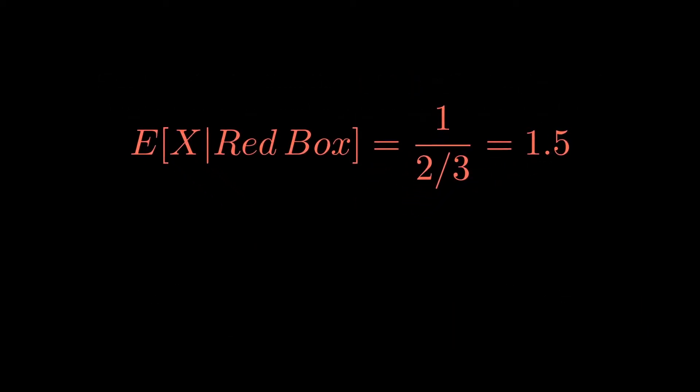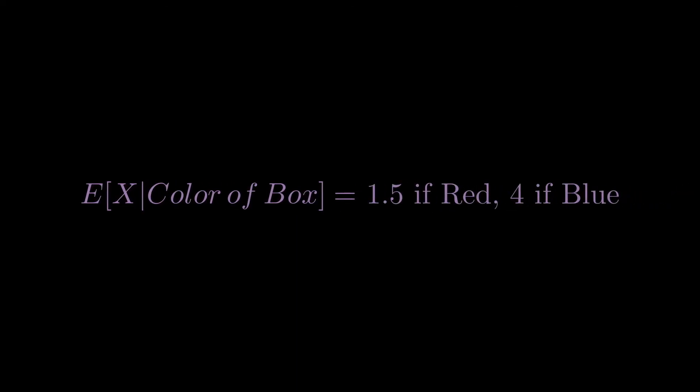Notice that both of these are conditional expectations. We're conditioning on the color to determine the number of draws we need. Now let's rephrase the question just a little bit. What is the expected number of draws if we ever know the color of the box? Now the answer is still pretty similar. It'll be 1.5 if it's red, 4 if it's blue.